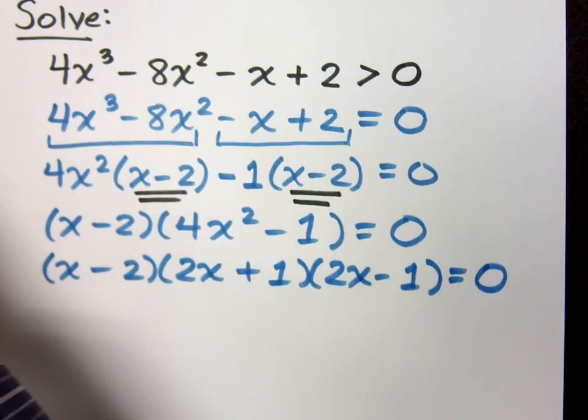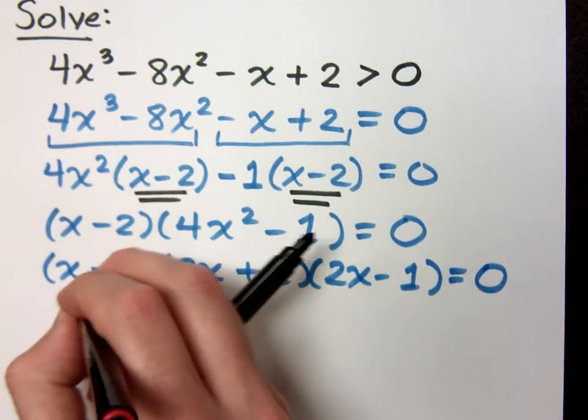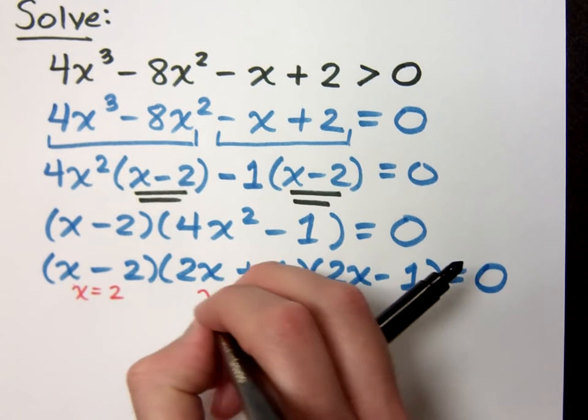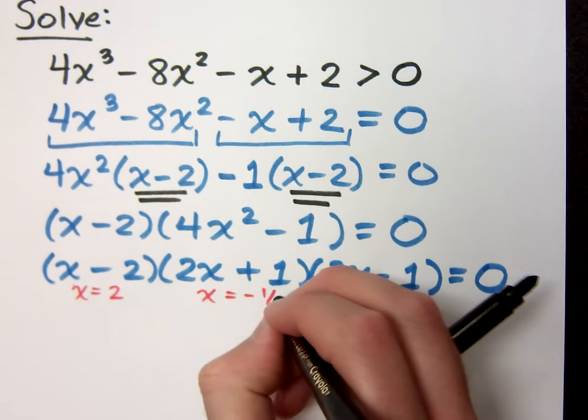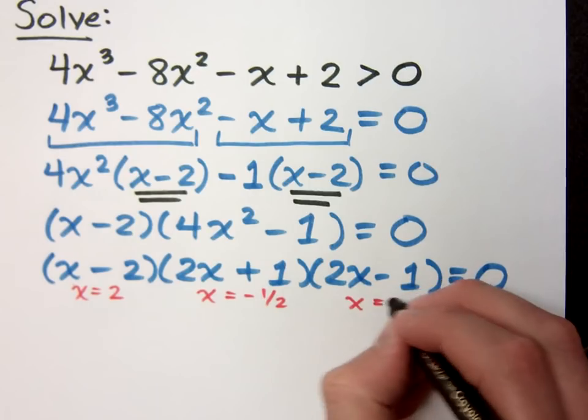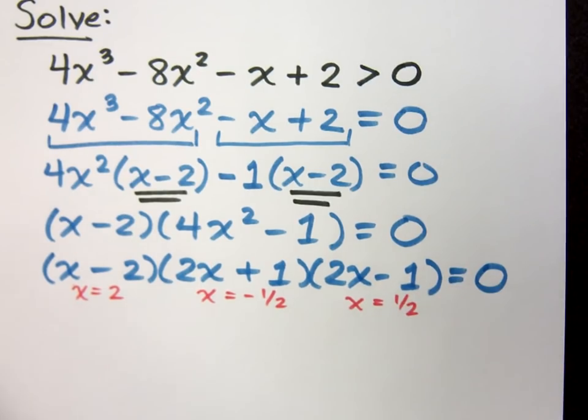So let's see what our critical values are. Here I get x is equal to positive 2, x equals negative 1 half, and x equals positive 1 half.